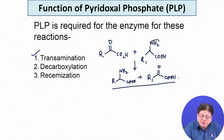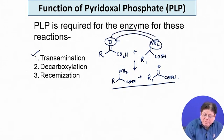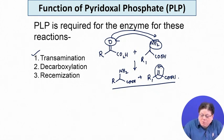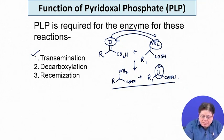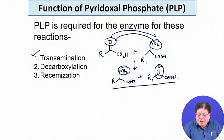This is called transamination because the amine from one amino acid is transferred — the amino group is transferred to the keto acid, which is in turn converted to a new amino acid. Although it appears that the oxygen is transferred, as we go through the mechanism we will see that the oxygen actually results from water, not from transfer. The amine is truly transferred, but the oxygen is derived from water. By transamination, one can synthesize new amino acids from existing ones.